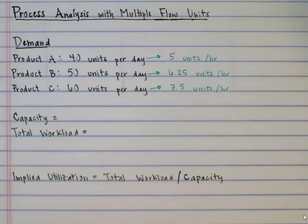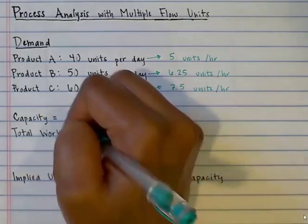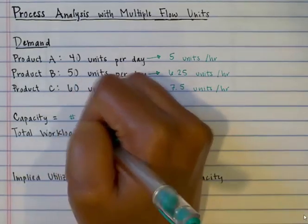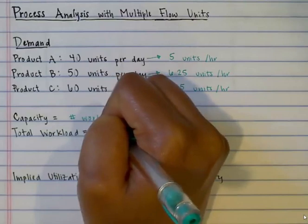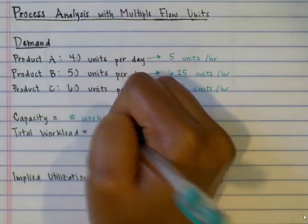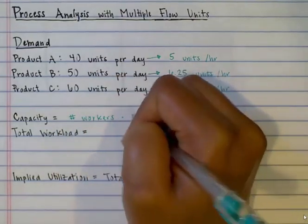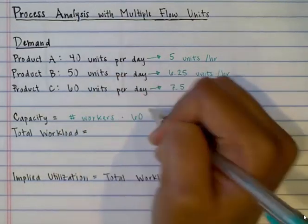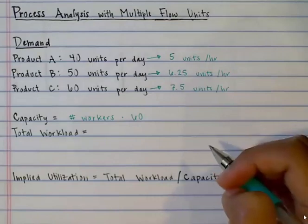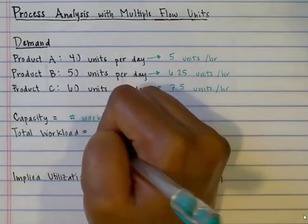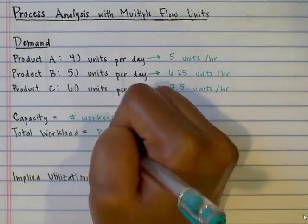The first question asks us to find the bottleneck. To do this, we create a generic flow unit, which is one minute of work. Then we must find the capacity and total workload of each resource. The capacity of each resource is determined by the number of workers — simply the number of workers times 60, since we are looking at capacity in one hour.